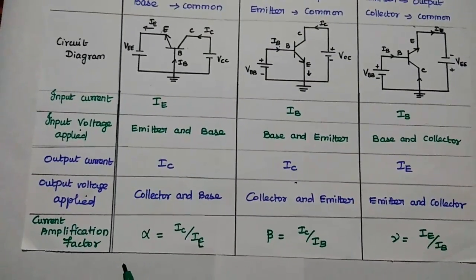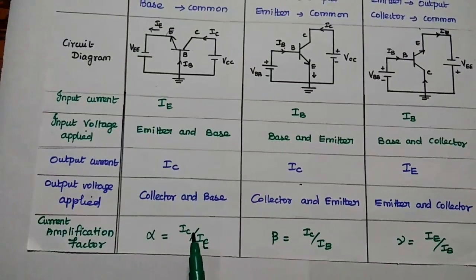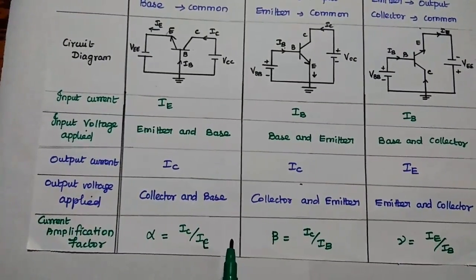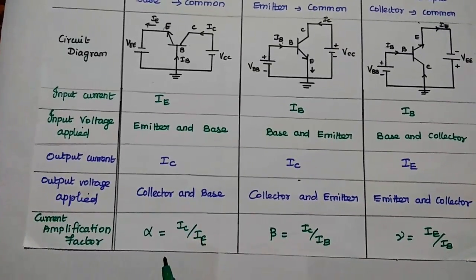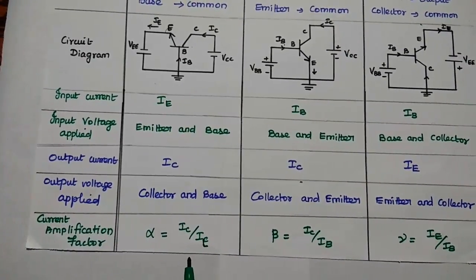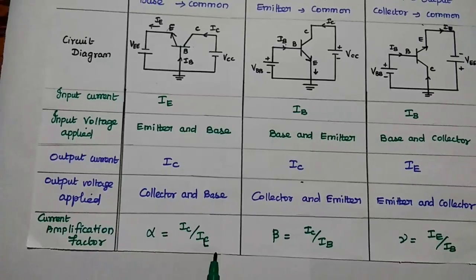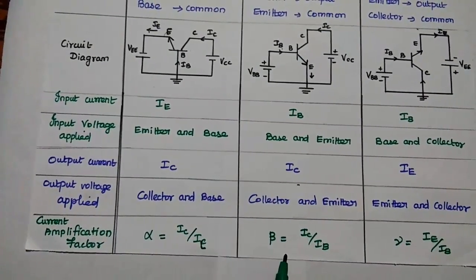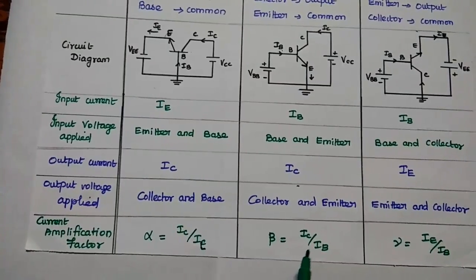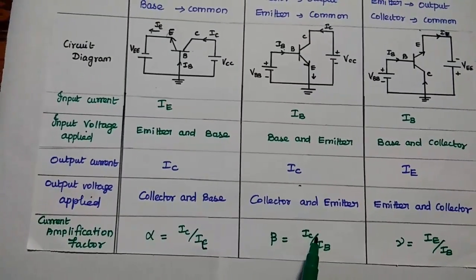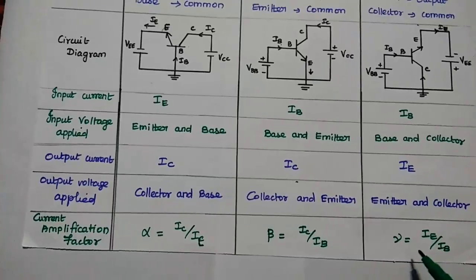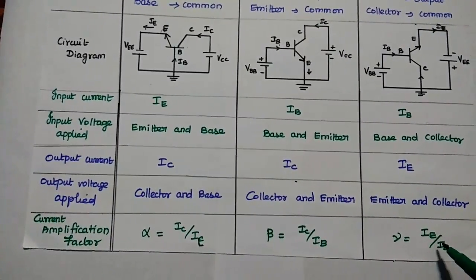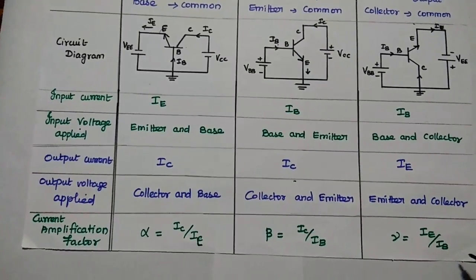The next important parameter is the current amplification factor, defined as the ratio of output current to input current. For common base, it is represented as alpha, equal to IC divided by IE. For common emitter, it is represented as beta, equal to collector current divided by base current. For common collector, it is represented as gamma, equal to emitter current divided by base current.